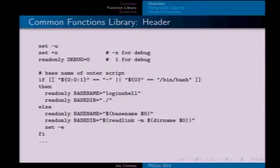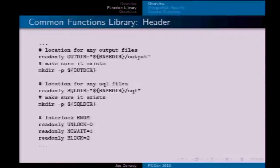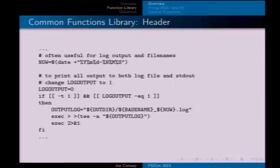The reason I only set `set -e` conditionally is that if you're running at a command-line shell and you turn on `-e` and an error occurs, it closes your shell, which is inconvenient. I often need an output directory specified under the base directory, and you don't want to assume it already exists so you create it forcibly. Similarly for a SQL directory, and I set these variables as read-only — effectively treating them like enums for things like lock states: no-wait and block.